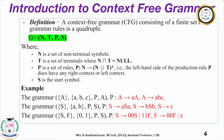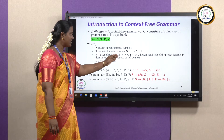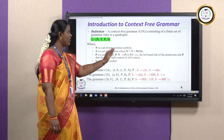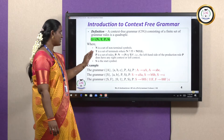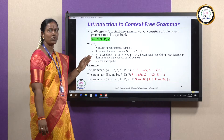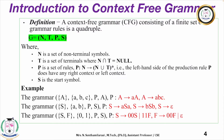P is nothing but the production rule, also called the substitution rule. The production rule is written with a non-terminal on the left-hand side and a combination of terminals and non-terminals on the right-hand side. S is nothing but the start symbol. Let me take a few examples.